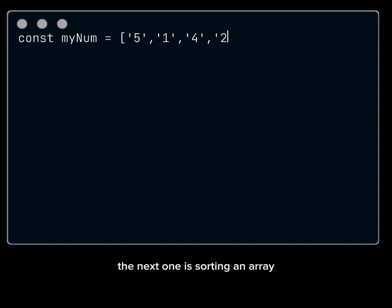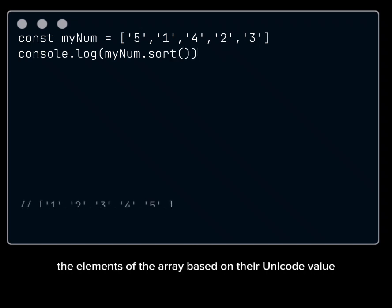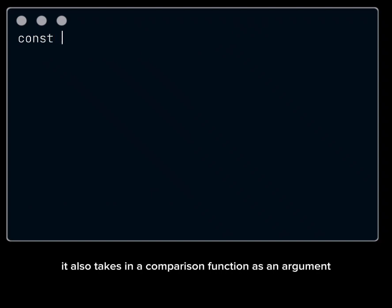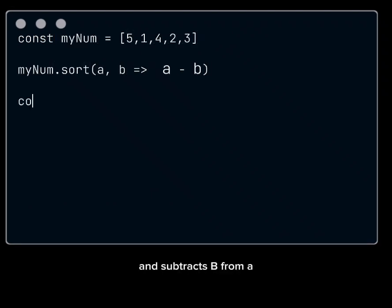The next one is sorting an array. The sort method of an array sorts the elements based on their Unicode value in ascending order. It also takes in a comparison function as an argument, which takes two elements, a and b, as inputs and subtracts b from a.